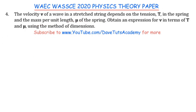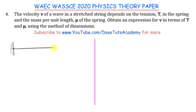So how do we go about solving questions like this using the method of dimensions? We are going to be looking at that holistically in this question. We have a particular string attached to a wall, and for this particular string the velocity of a wave experienced in it is going to depend on the tension T.